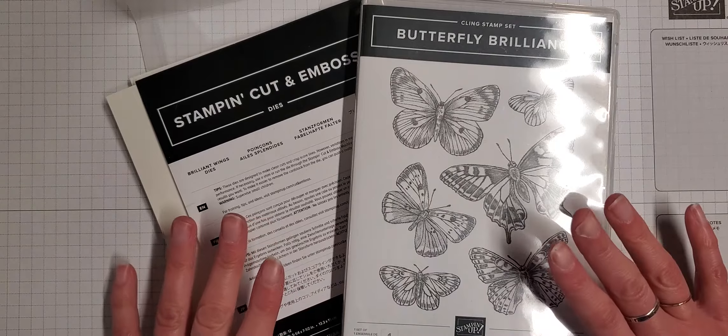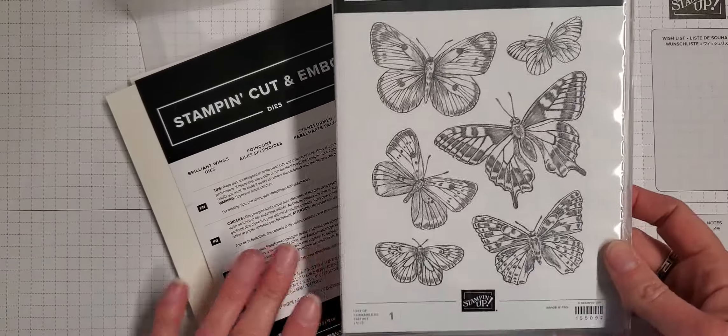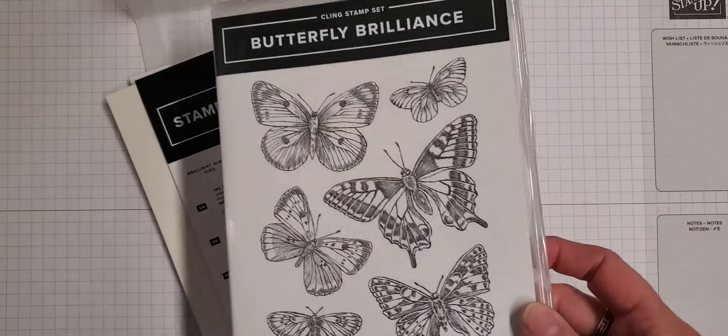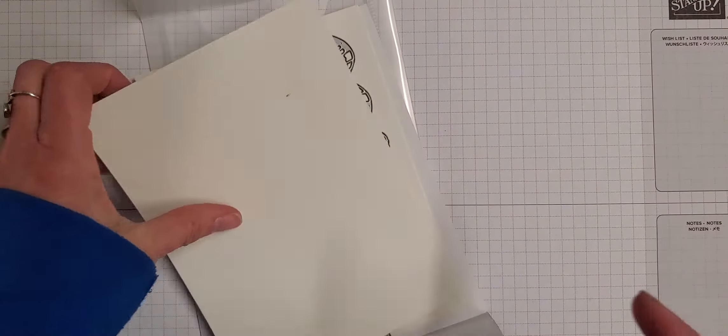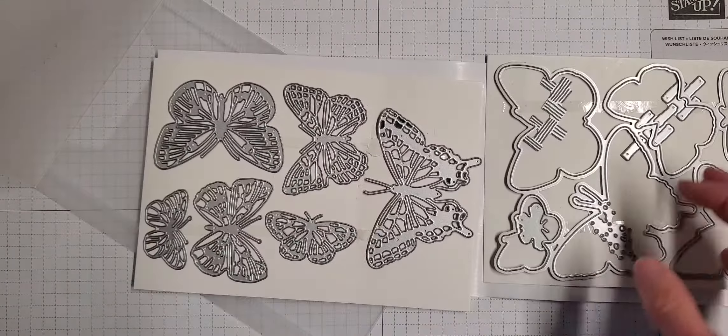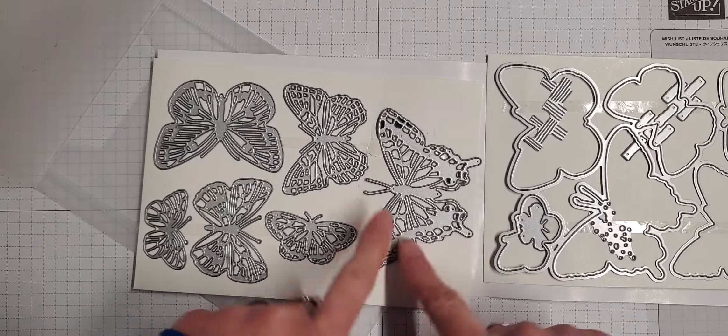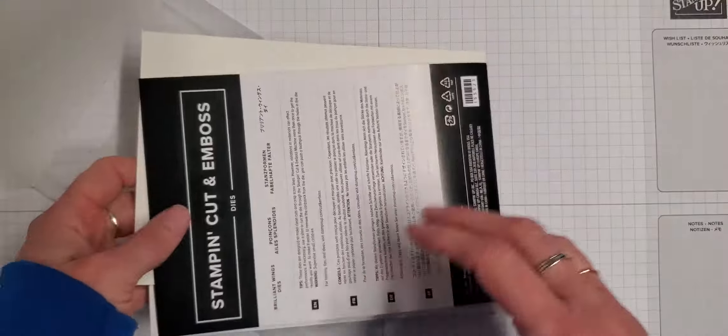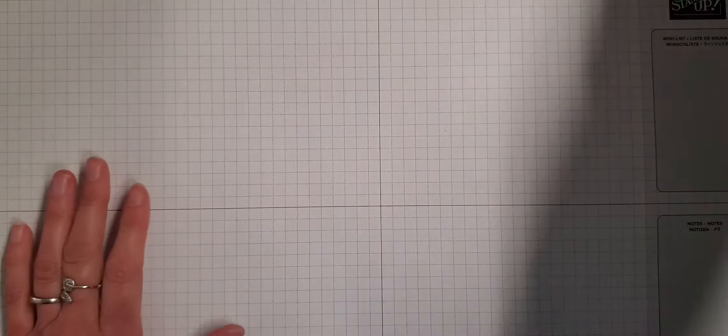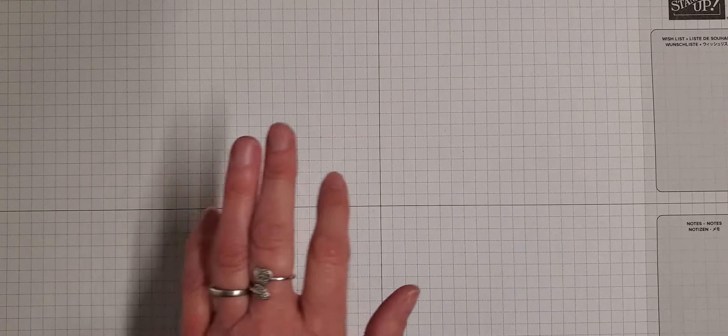I actually didn't really use the stamp set but there's a stamp set that goes with it. I'm using mostly the dies and these really beautiful detailed dies, and I paired it with our black and white True Love designer series paper.